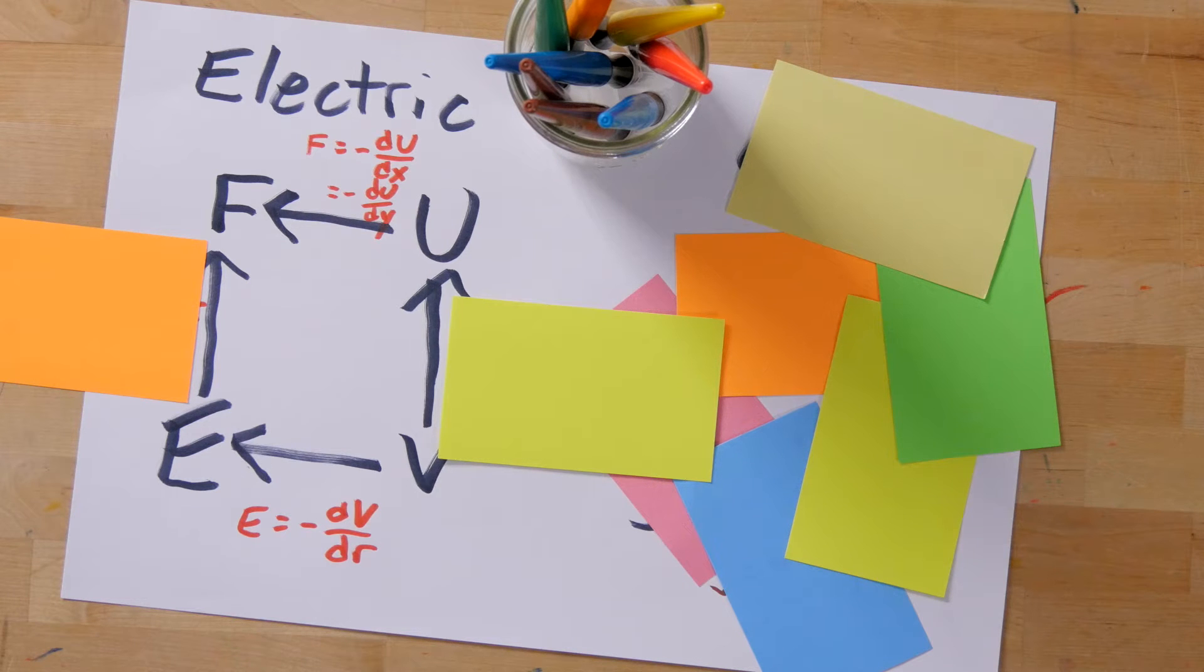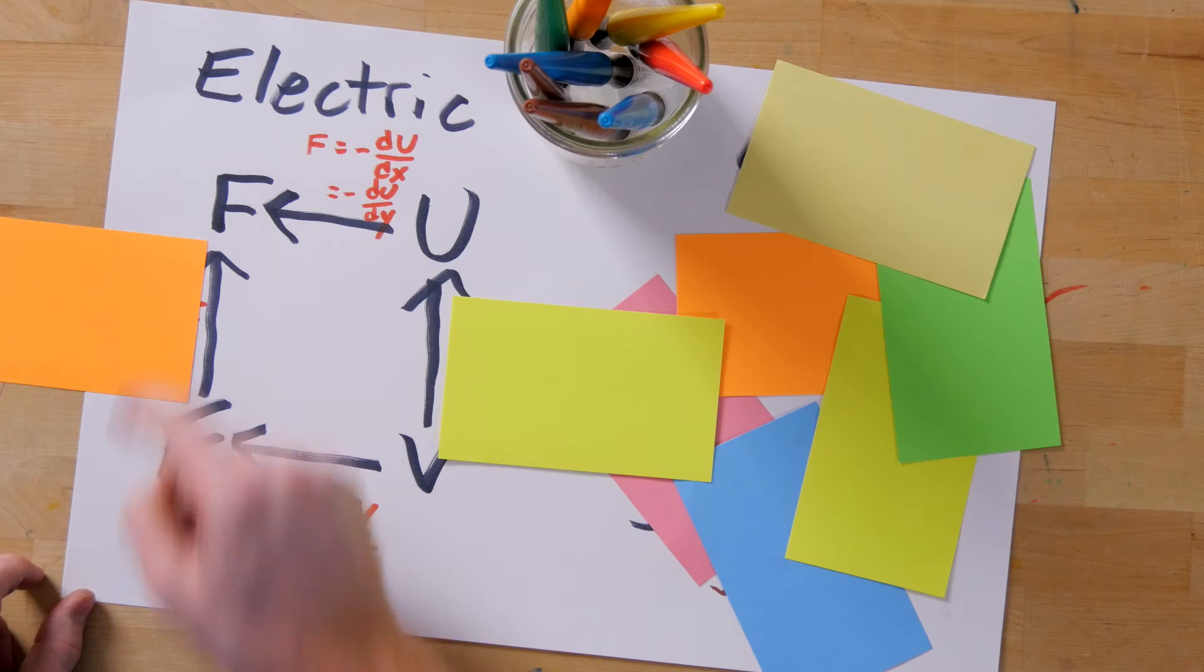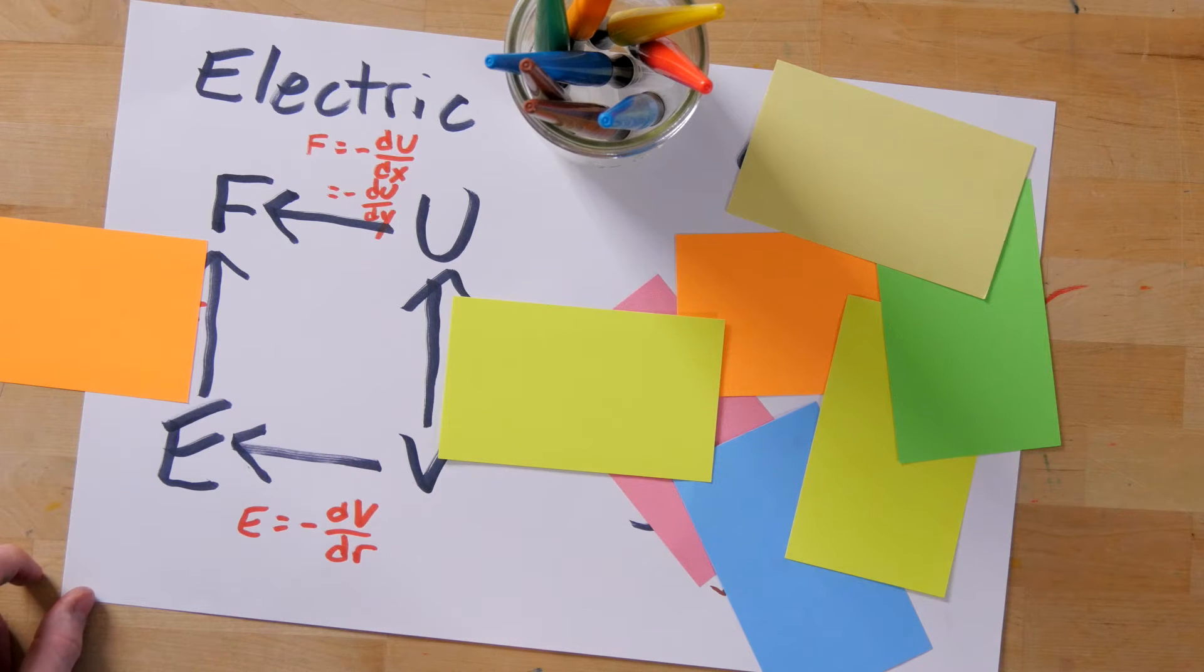You've seen this diagram a lot, so let's use it to tie together all that we know. Any time you move from right to left on this diagram, you take a negative derivative.